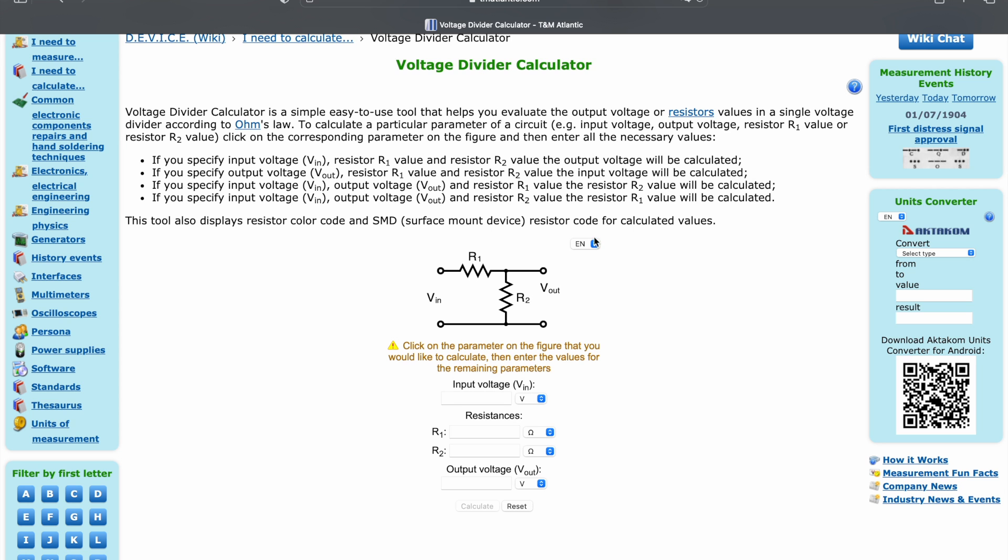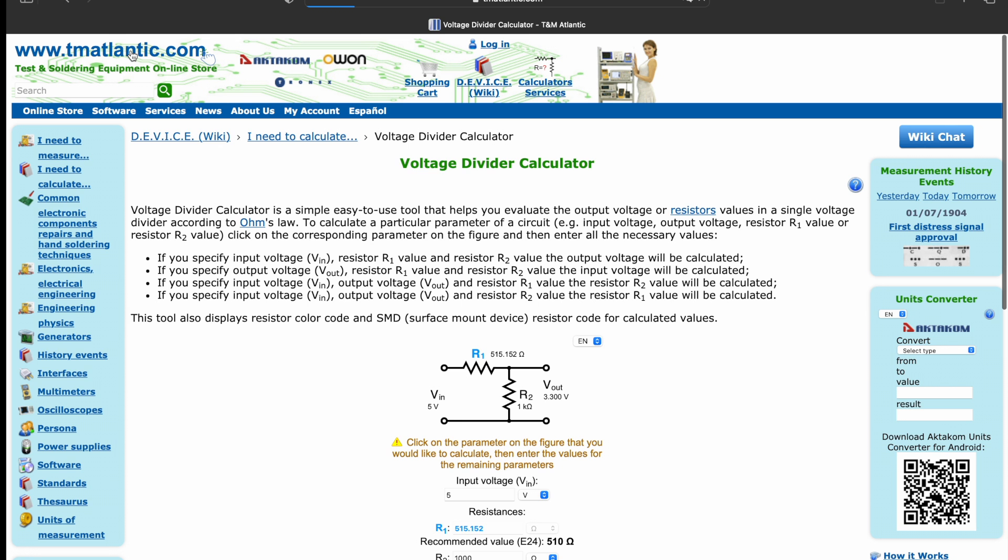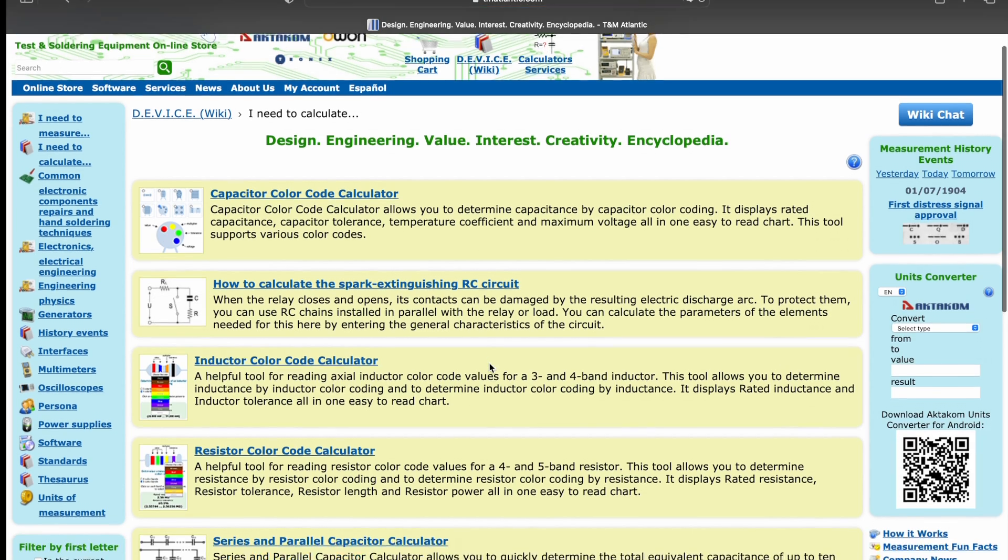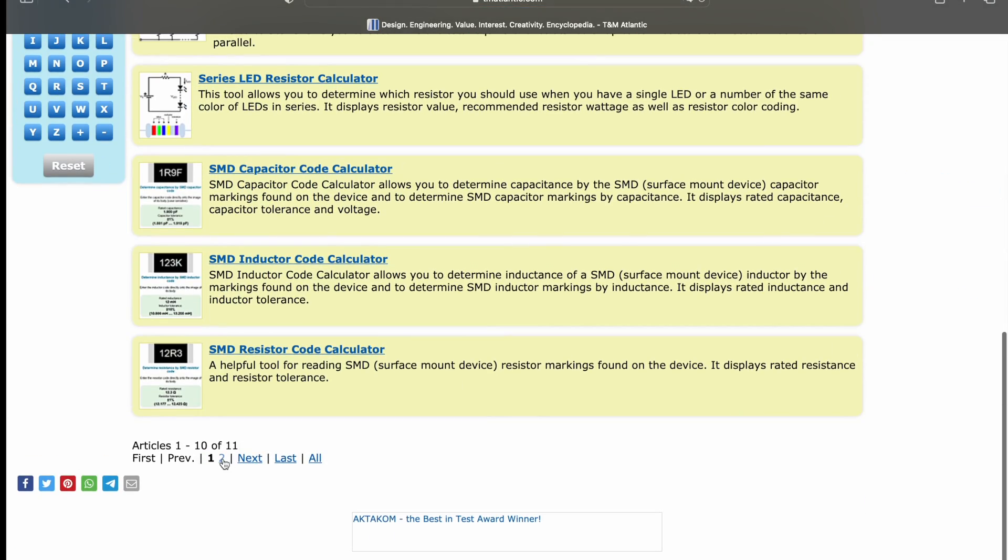A typical voltage divider consists of two resistors and has an input and an output voltage. Knowing the initial and required values, you can quickly calculate the circuit elements.